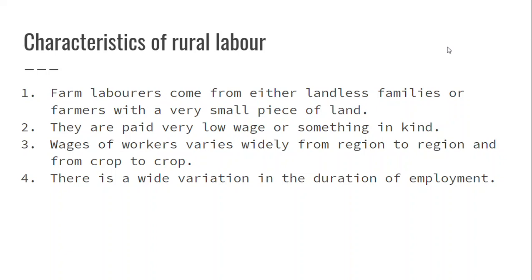The wages of workers vary from region to region and crop to crop, and there is wide variation in the duration of employment because farming is a seasonal activity in most areas. So if you're a farm laborer, you only get work during busy seasons like sowing, harvesting, or threshing. You don't get work when the crop is just standing there and growing — during that time they'll just be unemployed, sitting and waiting for the crops to grow.